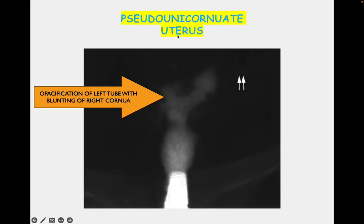There is a condition known as pseudo-unicornuate uterus. The actual unicornuate uterus looks like a banana with one patent tube. However, if opacification of only one side occurs — as seen here with opacification of the left tube and blunting of the right corner — it gives an appearance of a unicornuate uterus when it actually is not, due to scarring of the uterine cavity.